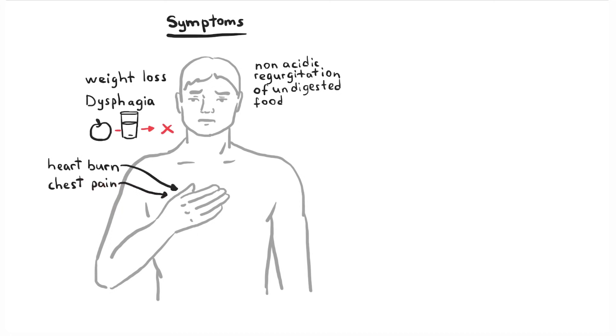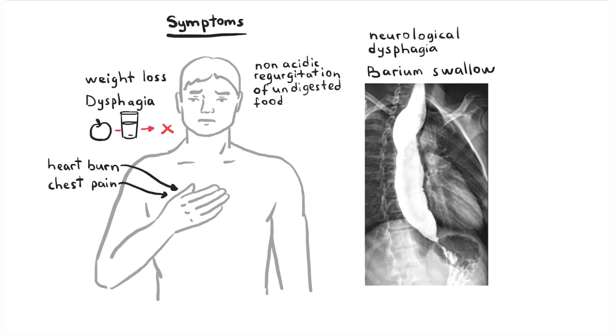The initial investigation to order in patients with suspected neurologic cause of dysphagia is barium swallow, which shows dilation of the esophagus with narrowing at the lower esophageal sphincter, known as a bird's beak appearance. The diagnosis is confirmed by esophageal high manometry testing.